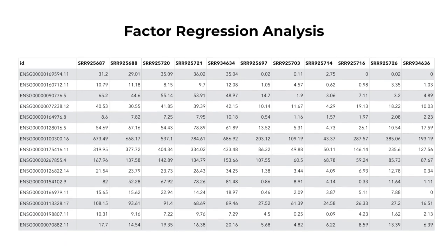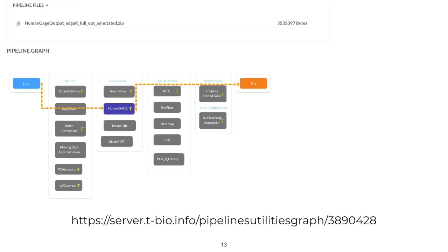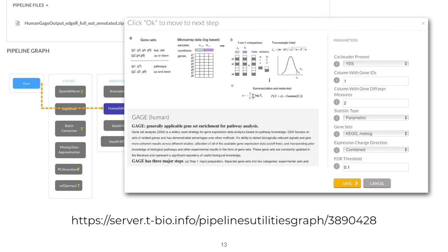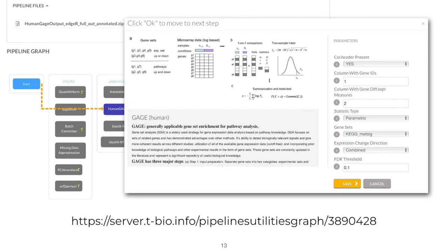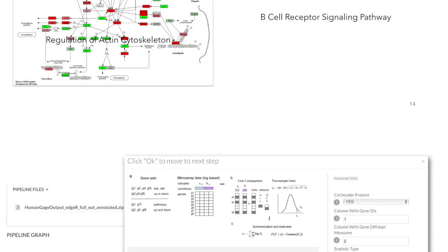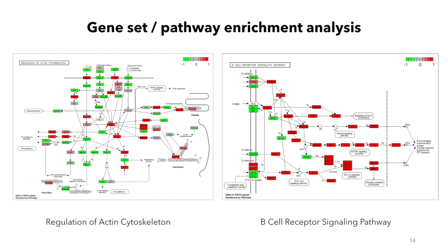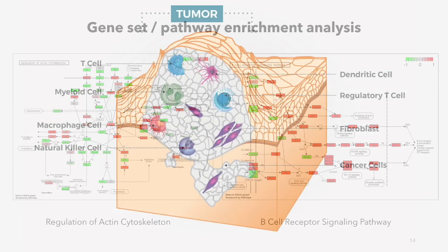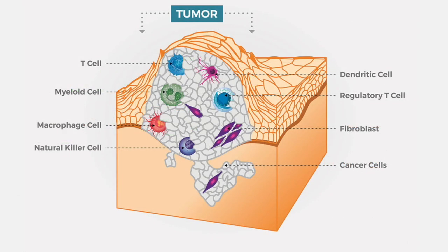One of these methods we will learn about is gene-set enrichment analysis. This is a process that can map certain genes to identify enriched pathways that are activated, deactivated, or deregulated. These pathways will give us insights into the biology of tumor development, as well as the interactions occurring within the microenvironment.